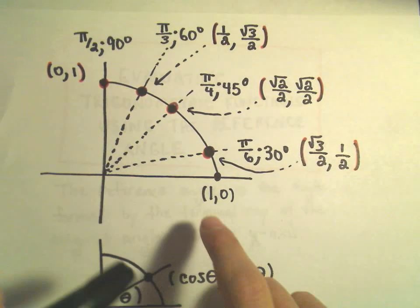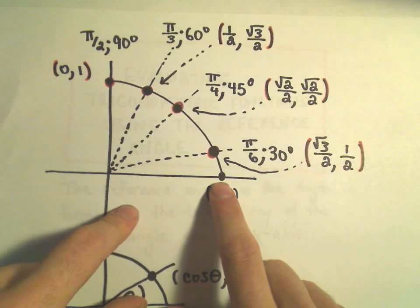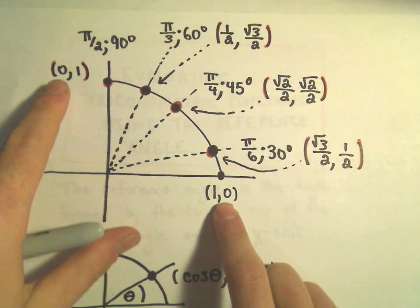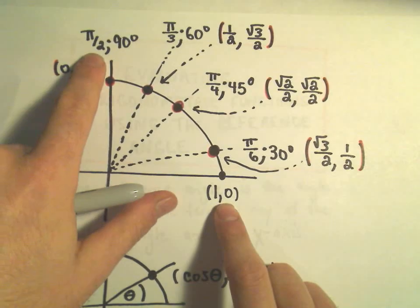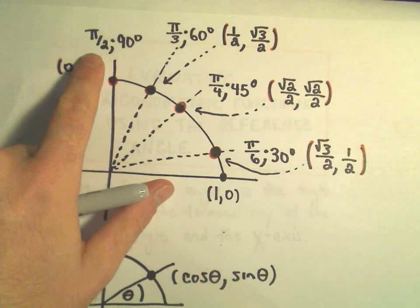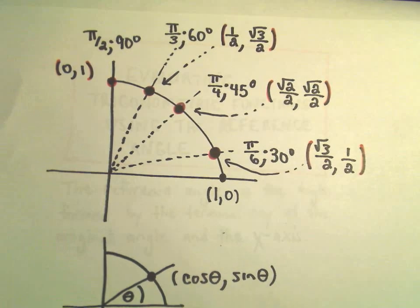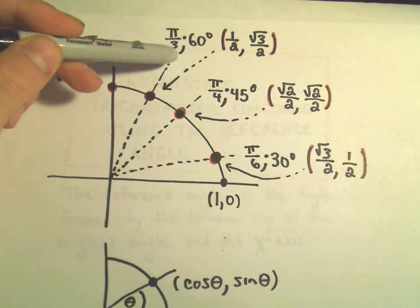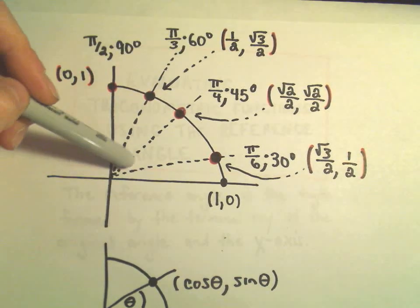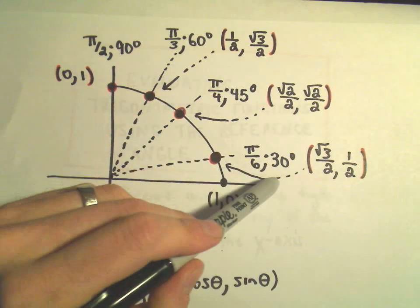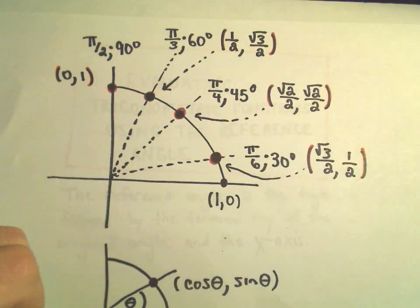If this is a circle of radius 1, it would hit the x-axis at the point (1, 0) and the y-axis at (0, 1). At the y-axis we're at the angle π/2 radians, or 90 degrees. We also have π/3 radians or 60 degrees, π/4 or 45 degrees, and π/6 or 30 degrees.